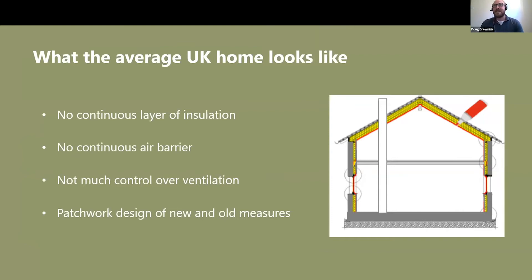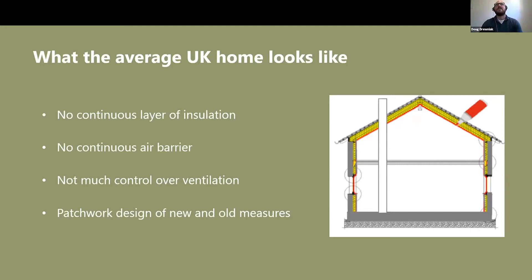The average UK home looks something like this diagram. Most homes have probably had their cavities done, so that's cavity insulation in the very slim line in the walls. Most homes will probably have had their windows replaced at some point, so probably looking at a double glazed window system. Most homes typically have the ground floor uninsulated - either suspended timber or a concrete floor. A lot of homes also have a chimney, whether blocked up or still in use as part of a stove setup, and a lot of homes will have some sort of loft insulation - that doesn't necessarily have to be in the slope, it could be horizontal. That's where most homes are in general terms.